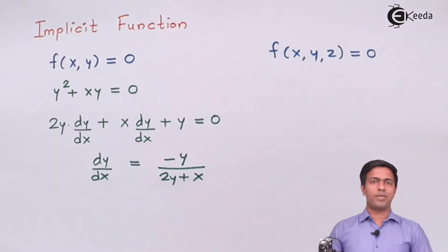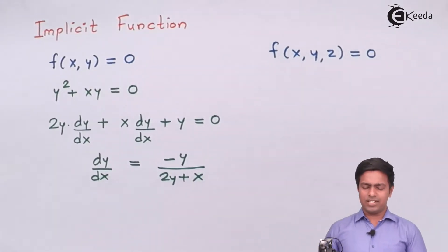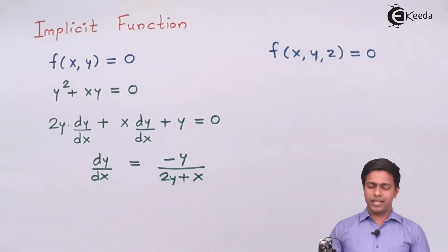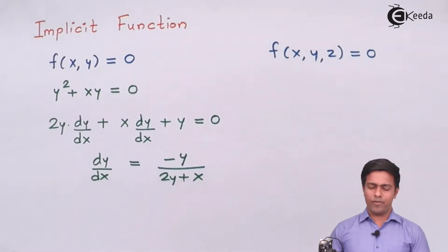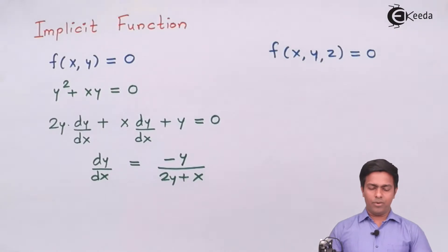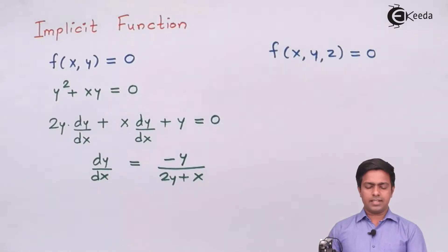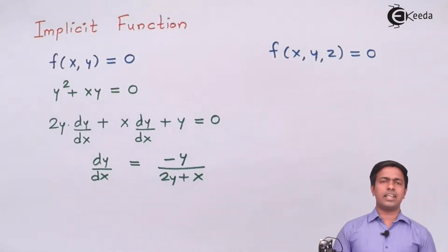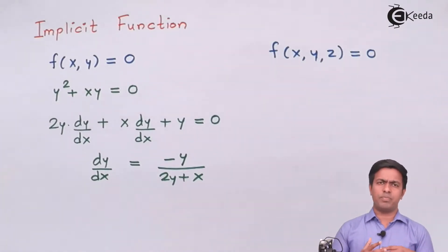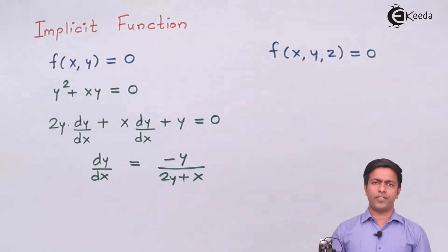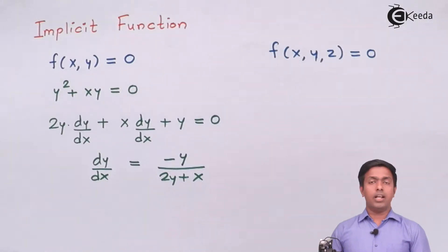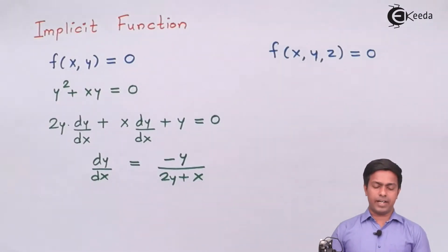So we get dy/dx = −y / (2y + x). This is the value of dy/dx, and this is how we used to do the differentiation of a function given in implicit form. Now let's understand the concept of implicit function more formally — I'll explain it with the help of a tree diagram.